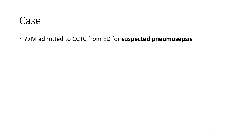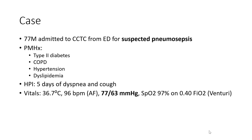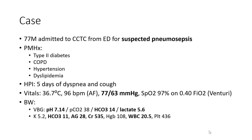We started our case with a 77-year-old gentleman who was recently admitted to our ICU from the emergency department for suspected pneumosepsis. Past medical history included type 2 diabetes, COPD, hypertension, and dyslipidemia. The patient had presented with five days of dyspnea and cough. Initial triage vitals were remarkable for hypotension with a blood pressure of 77 over 63 mmHg, oxygen saturations of 97% on 40% FiO2 with Venturi mask. Initial blood work demonstrated an elevated lactate with a metabolic acidosis, significant renal dysfunction, and leukocytosis.